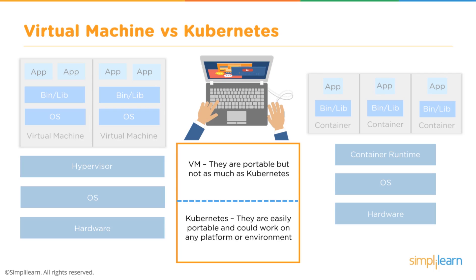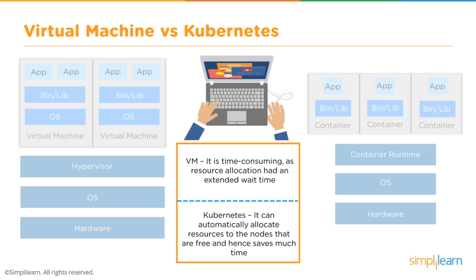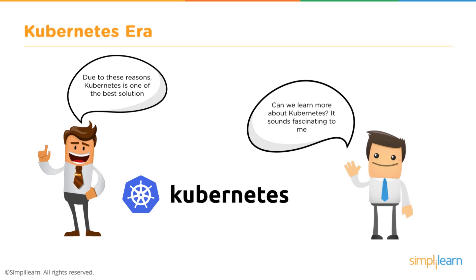VMs are not as portable as Kubernetes, and Kubernetes's portability is directly related to containerization. Because Kubernetes is built on top of containers, it is much less time consuming — you can script and automatically allocate resources to nodes within your environment. This is why, looking at the evolution of the time before Kubernetes, it had to come about: the demand for highly scalable, efficient solutions was a natural evolution starting from physical hardware, to virtual machines, to needing something much more sophisticated.